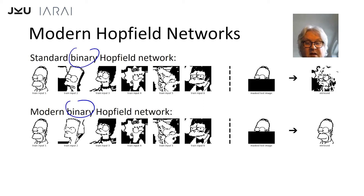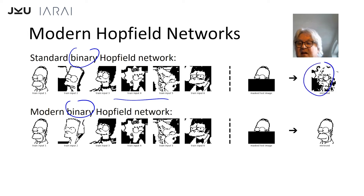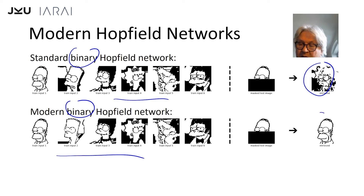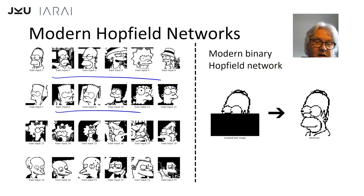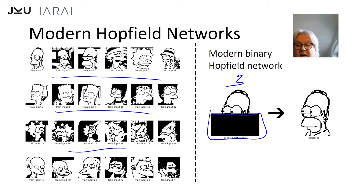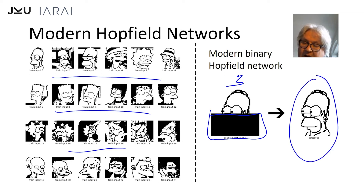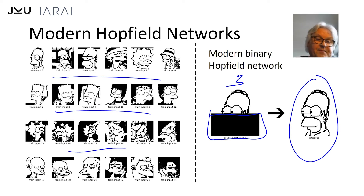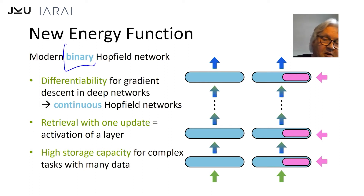Modern Hopfield networks work well. For the classical Hopfield network with highly correlated patterns, we get a spurious average state. But for the modern binary Hopfield networks we get Homer — quite a good retrieval with no retrieval error, even if we store many more patterns that are highly correlated. We can retrieve Homer perfectly even for thousands or even millions of patterns. However, these modern Hopfield networks are binary.